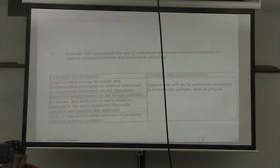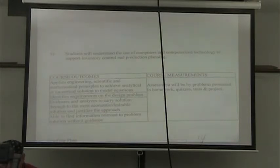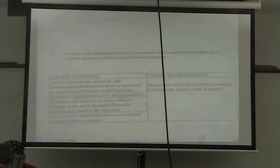Inventory control and production planning. Course Outcomes: Applies engineering, scientific, and mathematical principles to achieve analytic or numerical solutions to model equations. Identifies requirements on the design problem. Evaluates and analyzes to carry the solution through to the most economic or desirable solution, and justifies the approach. Able to find information relevant to problem solution without guidance.